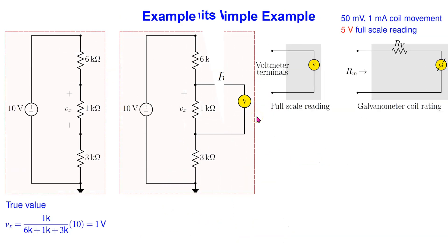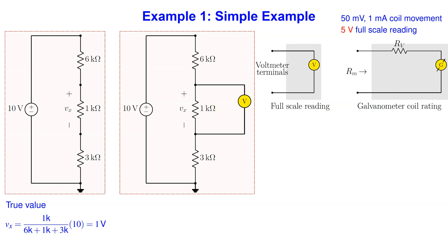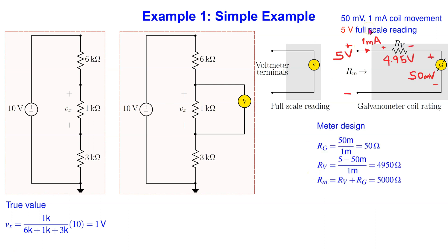Let us consider a simple example. Consider a voltage divider circuit with three resistors in series. Suppose we are interested in the voltage drop across the one kilohm resistor. Using the voltage division principle, it is easy to show that this voltage drop is one volt. In order to measure this voltage drop, we must connect the voltmeter in parallel with the one kilohm resistor.